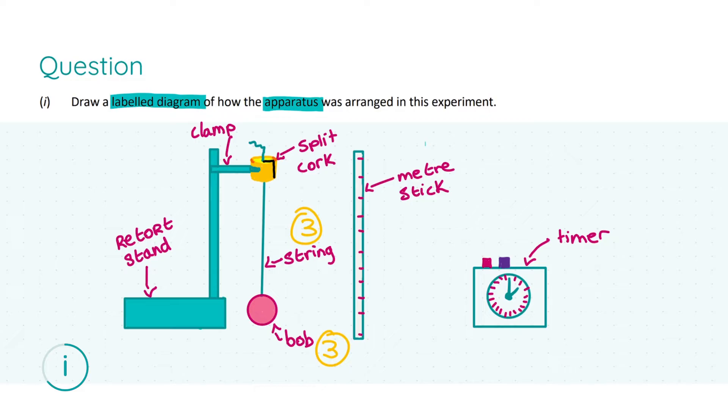Now you can get the remaining three marks for the split cork, the meter stick, or the timer. Any one of these three that you mention in your diagram will get you three marks, bearing in mind that you only need one of them to attain full marks. However, my big tip would be to draw and label as much as possible, as marking schemes can differ from year to year and some may be harsher than others.